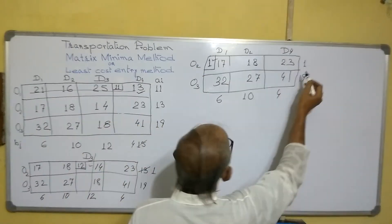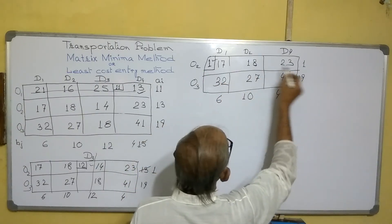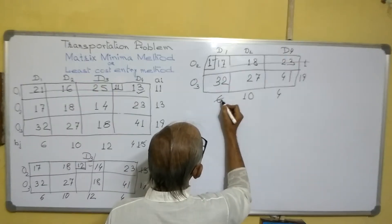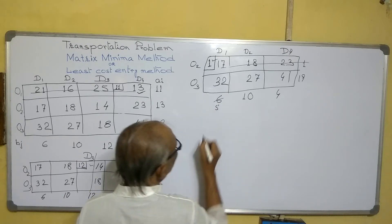Since here now from this origin, this is closed, everything is supplied. And here out of 6, 1 is already supplied, so 5 remains.